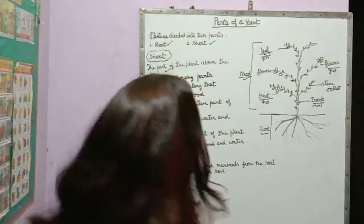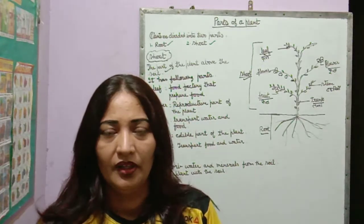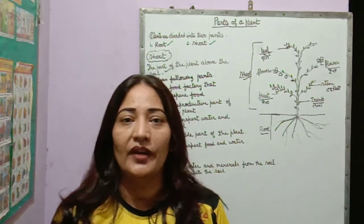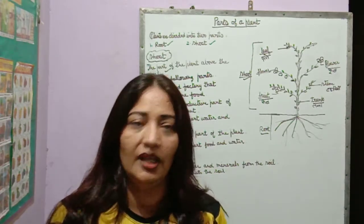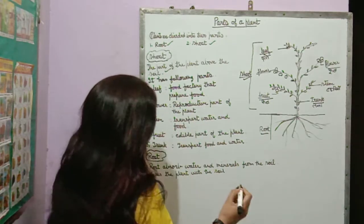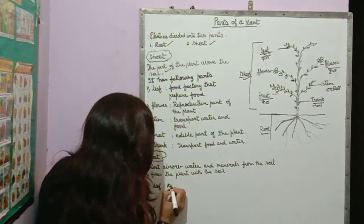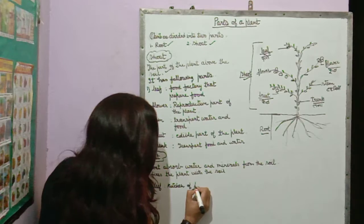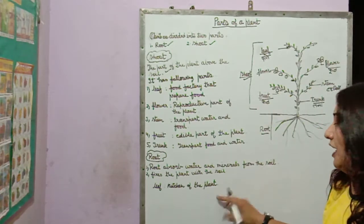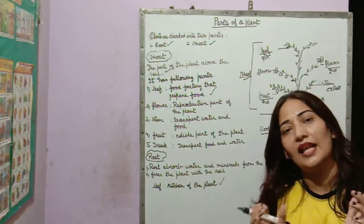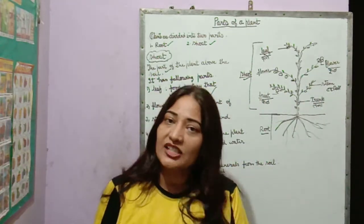Okay students, now first is leaf. Leaf is the food factory of the plant — the kitchen of the tree. A leaf is the food factory that prepares food. In easy language, leaf is the kitchen of the plant — the food factory of a plant or kitchen of the plant.